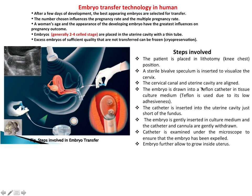The cervical canal and uterine cavity are aligned. Then the embryos are drawn into a Teflon catheter — here you can see the Teflon catheter — which holds the embryos in tissue culture media. Teflon is used because it is very less adhesive. Then the catheter is inserted into the uterine cavity.